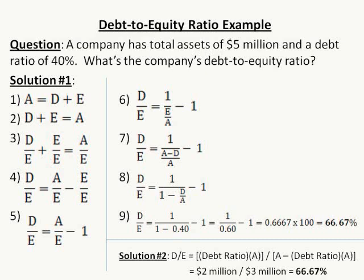Divide through each term by E, because I want to eventually solve for D over E. So D divided by E plus E divided by E equals A divided by E. Step four, solve for D divided by E: D over E equals A over E minus E over E. Since E divided by E equals one, in step five you have D divided by E equals A divided by E minus one.